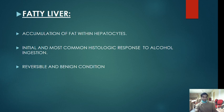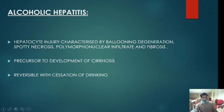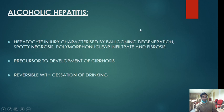Fatty liver is the initial and most common histological response to alcohol ingestion — seen in 80 to 90% of patients. It is reversible on abstinence of alcohol and is a benign condition. Alcoholic hepatitis is characterized by hepatocyte injury with ballooning degeneration, spotty necrosis, increased polymorphonuclear infiltrate, and fibrosis. It is a precursor to cirrhosis and, like fatty liver, is reversible with cessation of drinking, but is more dangerous than fatty liver.